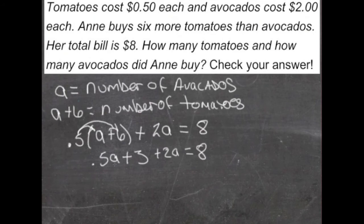We'll take that 0.5a and combine it with this 2a. That gives us 2.5a. And then to get the 3 off of this side, we'll subtract it from here and subtract it from here.